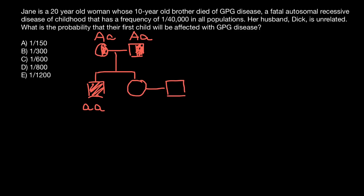And Jane is married, and here is her husband Dick. Now we have to find the probability that if they have a child, that child would also have this genetic disorder. We designate the child with a diamond sign because we don't know the sex of their future child, and this genetic disorder is not sex-related — it is an autosomal recessive disorder.